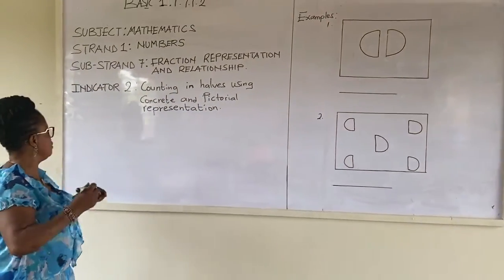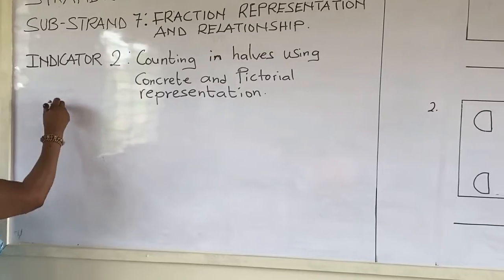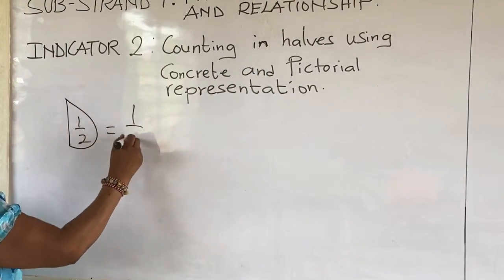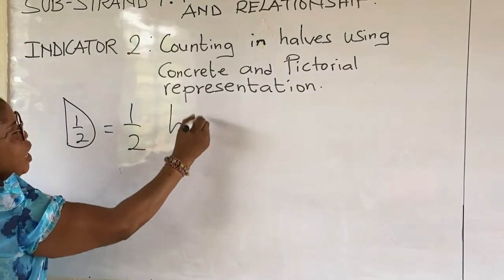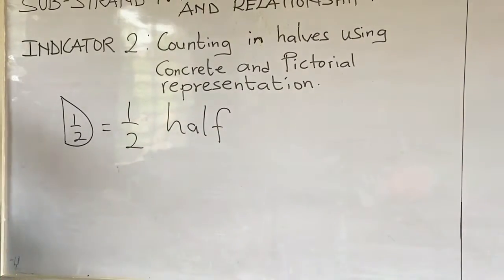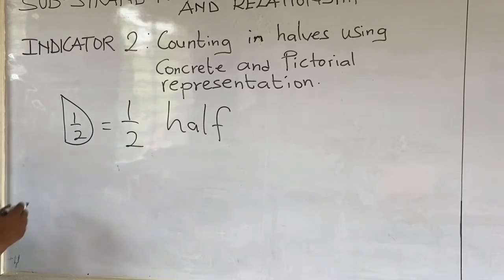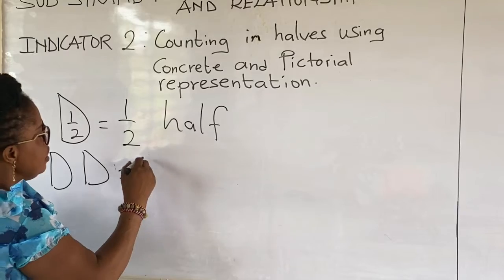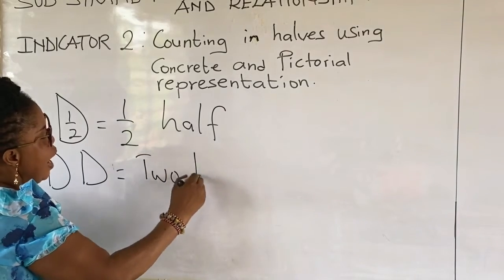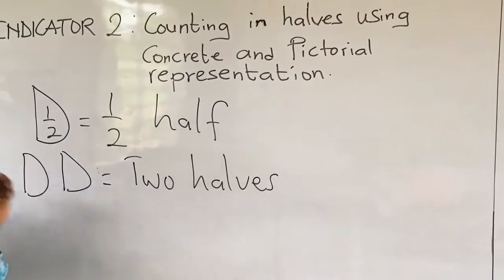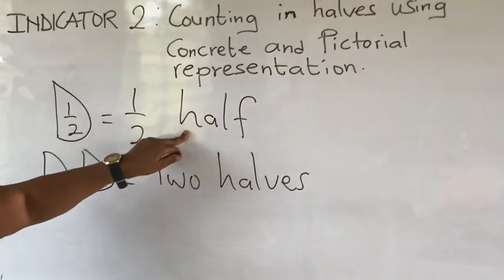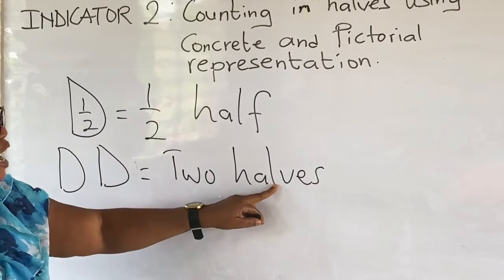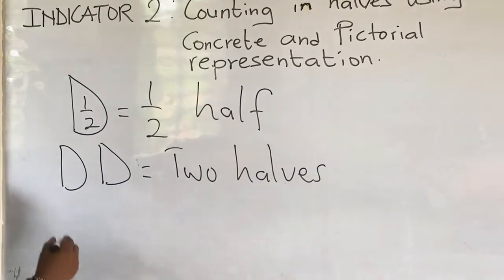Now, let's move on to the work. This is equal to half, half of a whole. So, when we have two halves, it is written as two halves. That is, one half is H-A-L-F. Two halves is H-A-L-V-E-S.